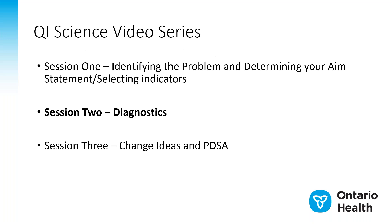Welcome to the second in our video series of QIP and QI science. My name is Alice Straughan and I am a Quality Improvement Specialist with Ontario Health. This is video two of a three-part series, which also includes videos on how to identify your problem and select indicators, and how to identify change ideas and process measures for the indicators you have chosen for your QIP.